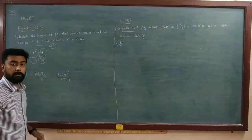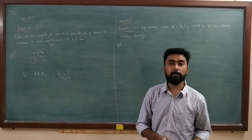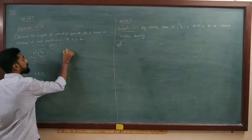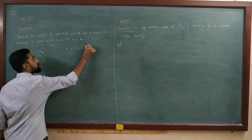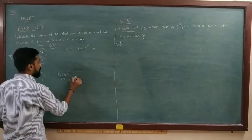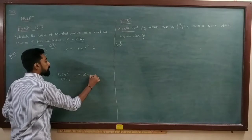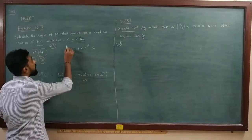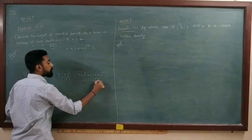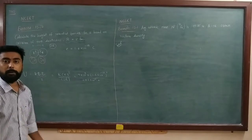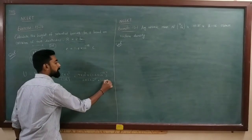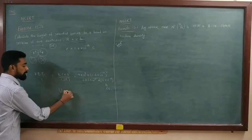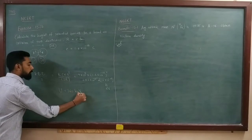Substituting: U = k·e² / (2r), where k = 9×10⁹, e = 1.6×10⁻¹⁹ C, and r = 2 fm = 2×10⁻¹⁵ m, so 2r = 4×10⁻¹⁵ m. Calculating: U = (9×10⁹ × (1.6×10⁻¹⁹)²) / (2 × 2×10⁻¹⁵), then dividing by 1.6×10⁻¹⁹ to convert to electron volts, the final answer is U = 360 keV.